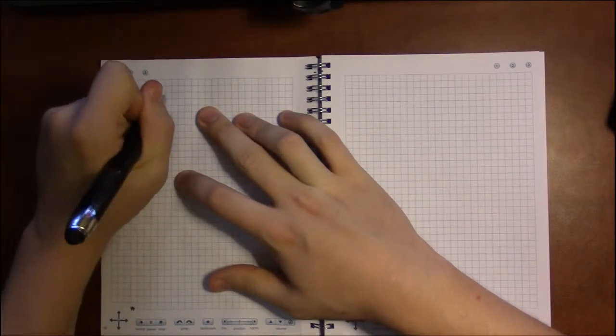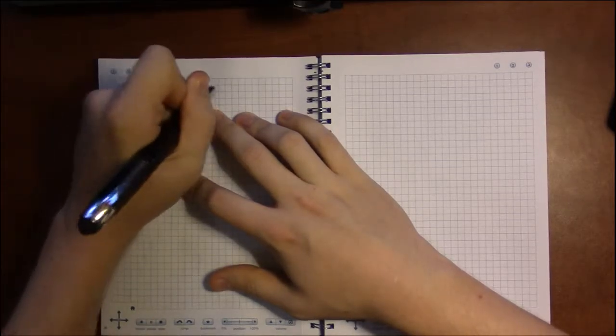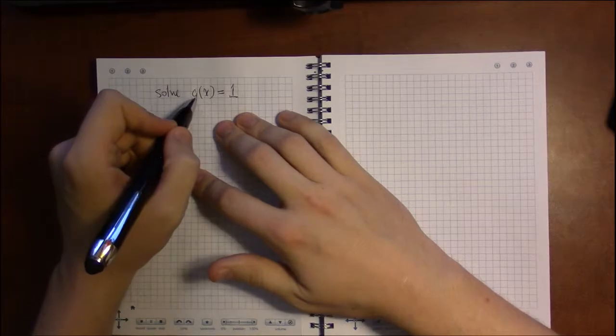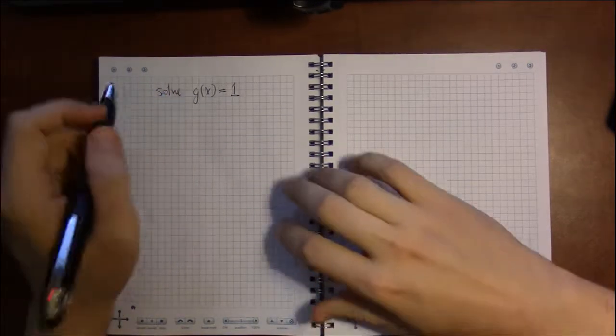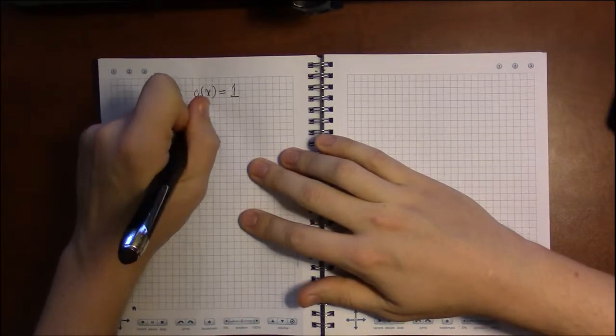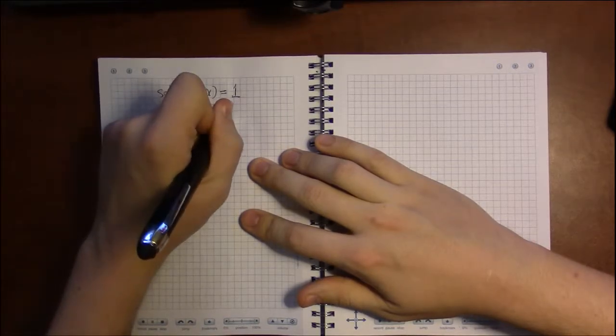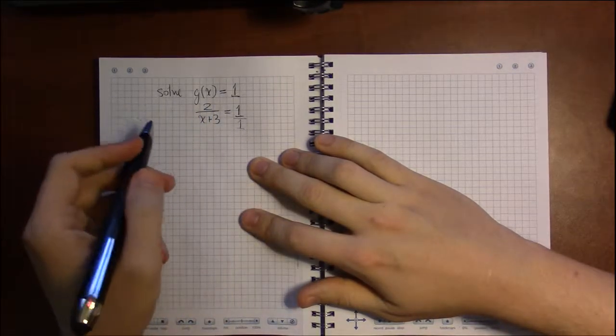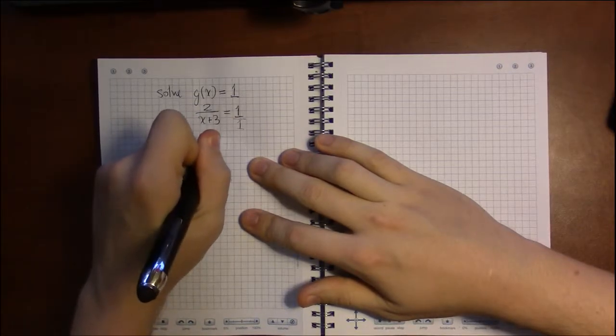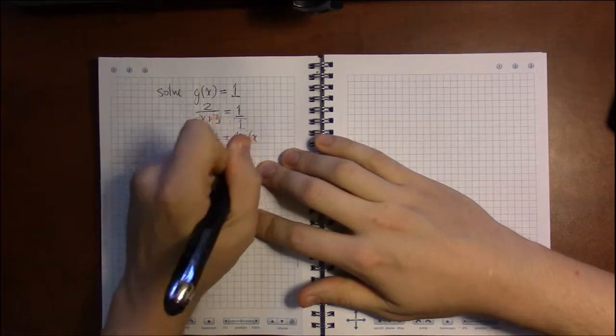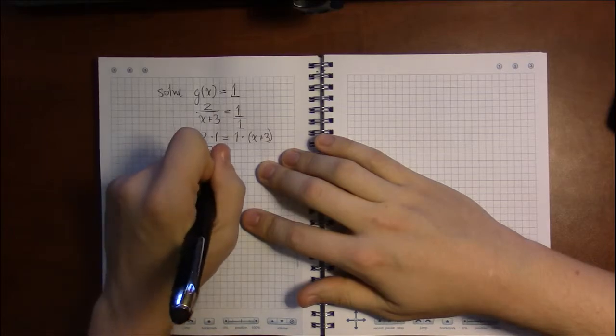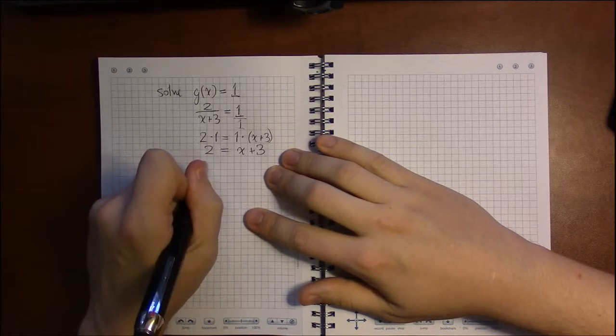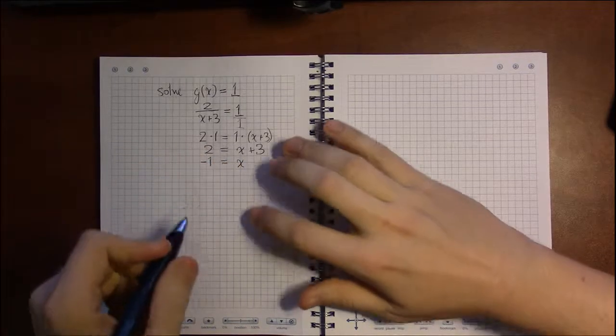Well, let's find out. We have to solve g of x equals 1, and whatever x values make g equal to 1, those are going to be the specific x values that we cannot have in our domain. So g of x was 2 over x plus 3, and you can think of 1 as being 1 over 1, so you can then cross multiply. So you have 2 times 1 equals 1 times x plus 3. This is 2 equals x plus 3, so subtracting 3 from both sides we get minus 1 is equal to x.